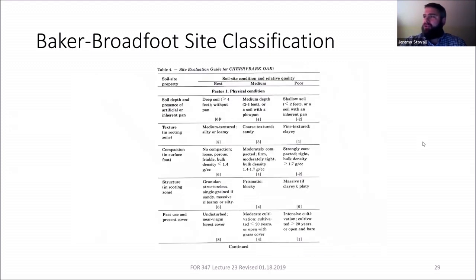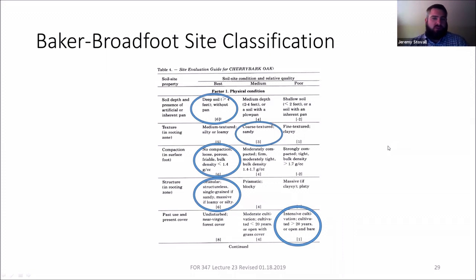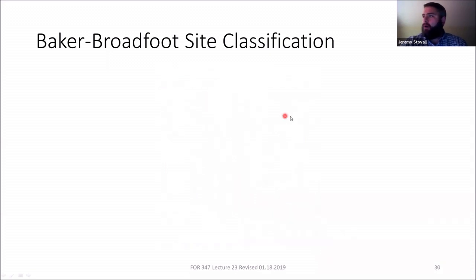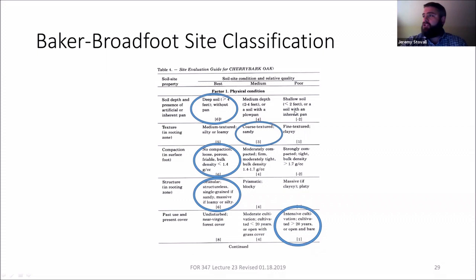You look at the multiple choice test and go through it. For each row you have three choices and pick the one that best matches your soil pit. You'll notice a bracketed number — for example six, four, or negative two. The superscript two next to those numbers is just a footnote reference; it does not mean you square the six to get 36.